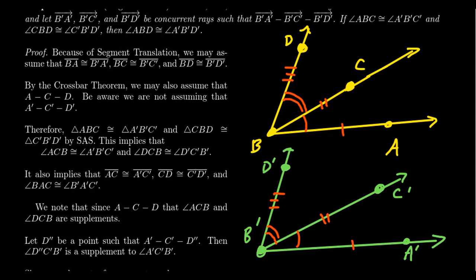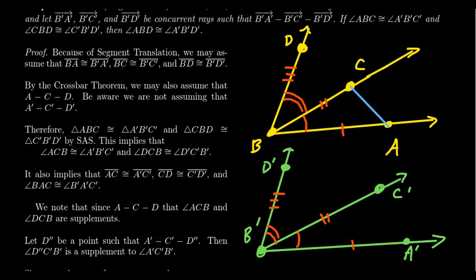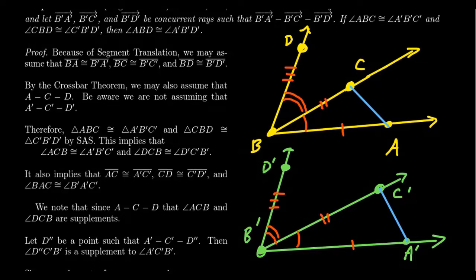Now we're in a situation where we can talk about triangle congruences. Consider triangle ABC versus triangle A'B'C'. We have a side BA ≅ B'A', an angle ABC ≅ A'B'C', and a side BC ≅ B'C' — so by side-angle-side, these triangles are congruent. Therefore, as corresponding parts of congruent triangles are congruent, we get that angle ACB is congruent to angle A'C'B'.